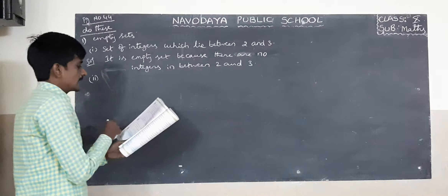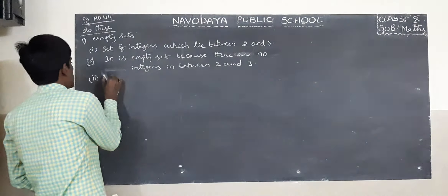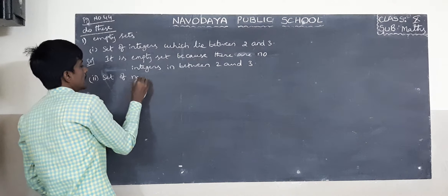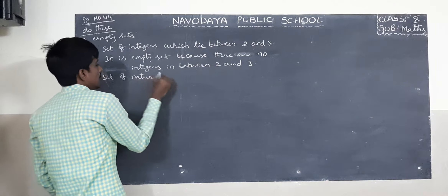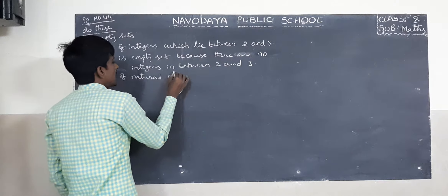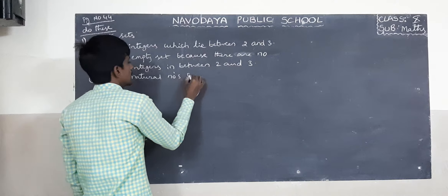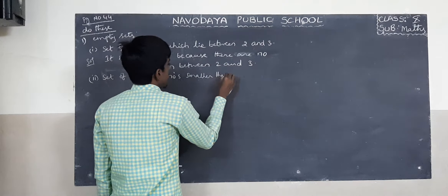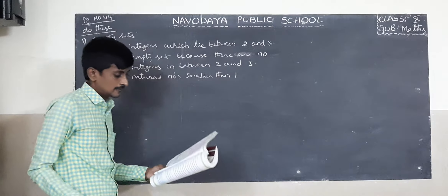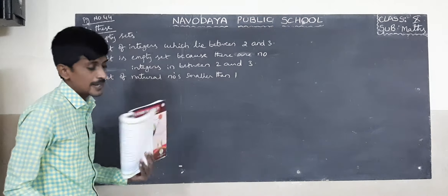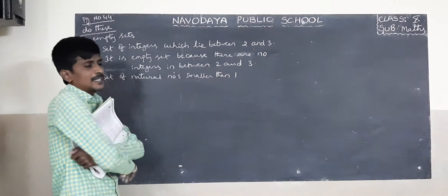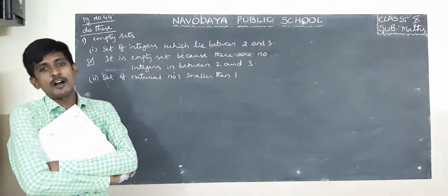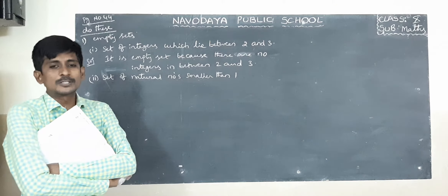Second one: set of natural numbers smaller than 1. What are the natural numbers? Where are they starting from? 1 onwards: 1, 2, 3, 4, 5, 6, and so on. These are called natural numbers.